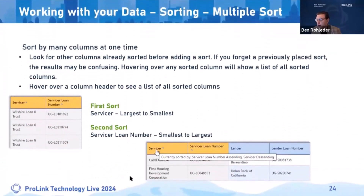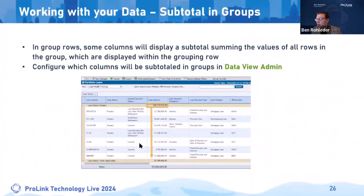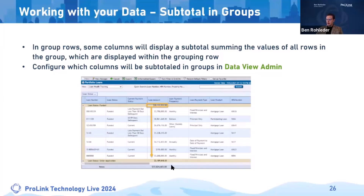I showed you sorting and grouping there. Subtotals and groups: you can subtotal an entire column in the data view down at the bottom, and you can do that in data view admin. If you'd like to see a rollup of columns that have a data type of integer, you can check the sum checkbox in the data view admin screen to turn that on or off. I'll get into data view admin in just a minute.